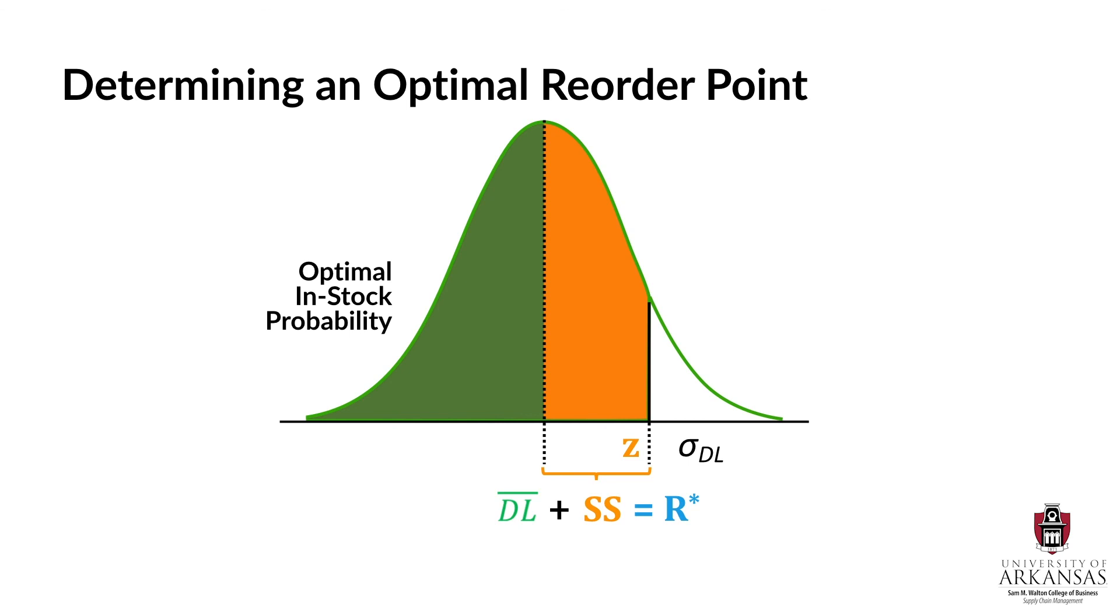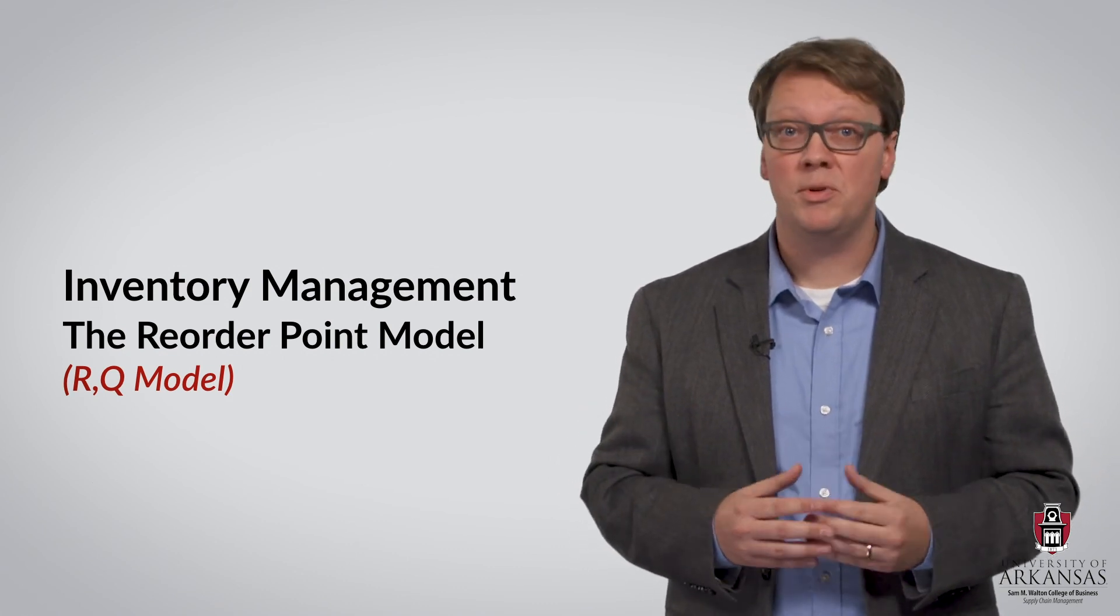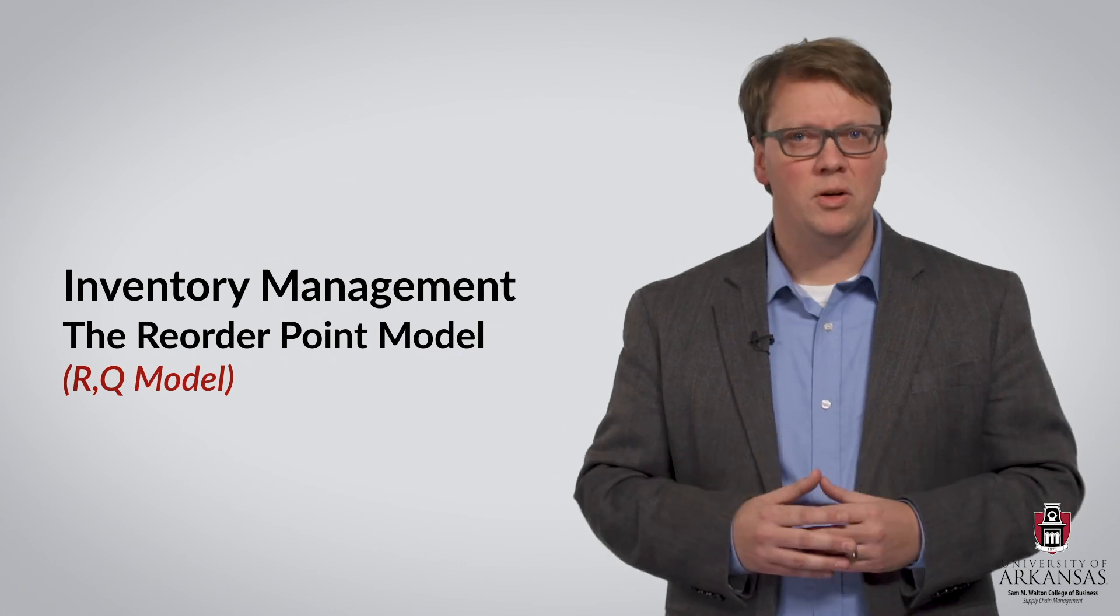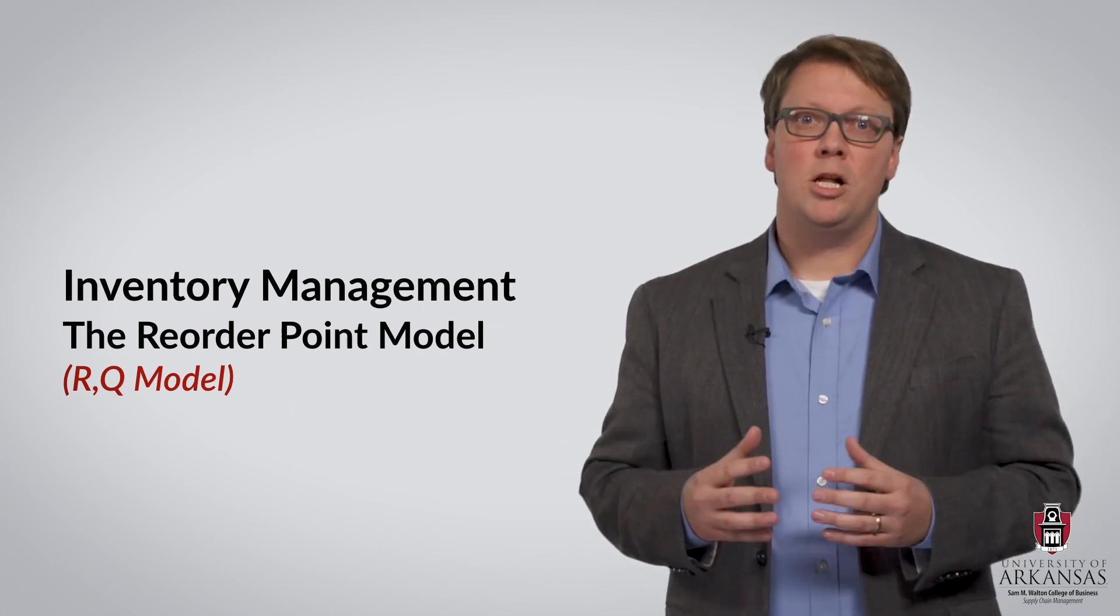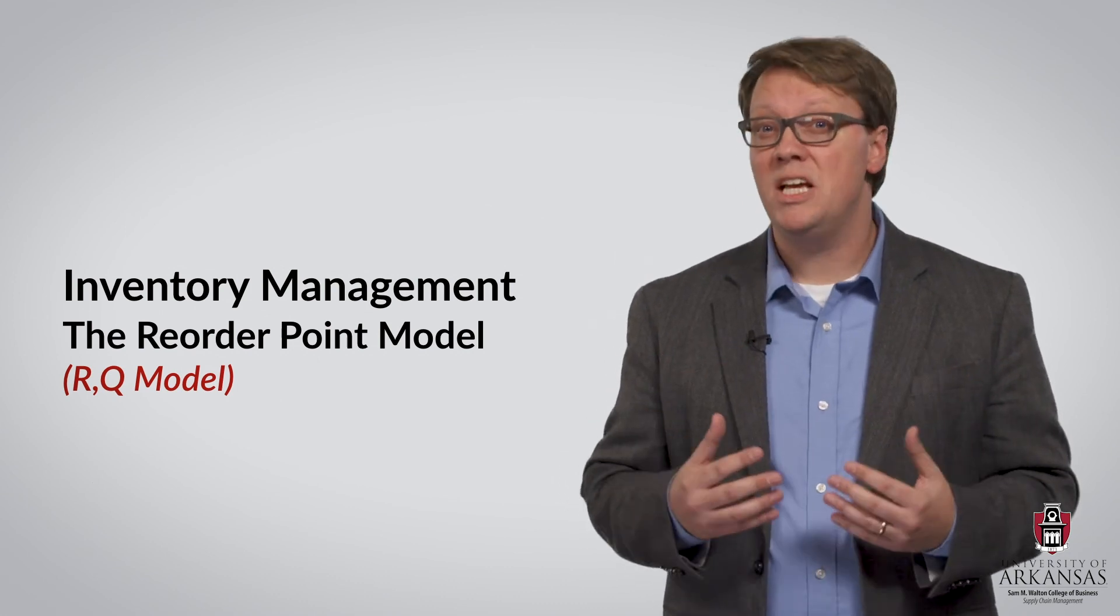I realize this may all sound much more complicated than it actually is. For now, let's remember this. To determine the optimal reorder point, we start out by calculating the optimal in-stock probability using either the formula or the power of Excel. We then convert this probability to a standard normal variant Z and use that to calculate optimal safety stock levels, which then define the optimal reorder point. I will show you how to implement an optimal RQ policy in a separate series of Excel video demonstrations. I encourage you to watch those videos and replicate what I do. This will help bring all this theory to life and show you how impactful, effective and efficient inventory management can be.